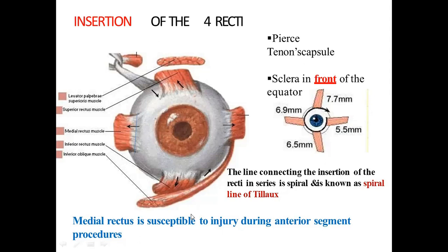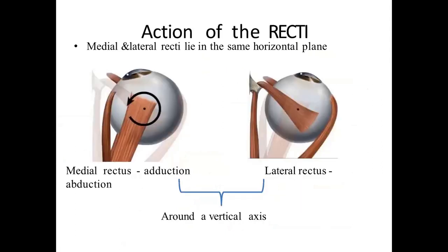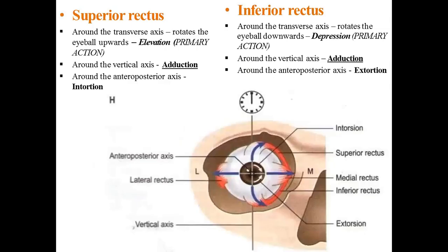The line connecting the insertions of the recti in series is spiral, known as the spiral of Tillaux. The medial rectus is susceptible to injury during anterior segment procedures. The medial and lateral recti lie in the same horizontal plane; the superior and inferior recti lie in the same oblique plane, 25 degrees lateral to the optical axis. In the abducted eye, the axis coincides with the visual axis. The medial rectus causes adduction; the lateral rectus causes abduction.